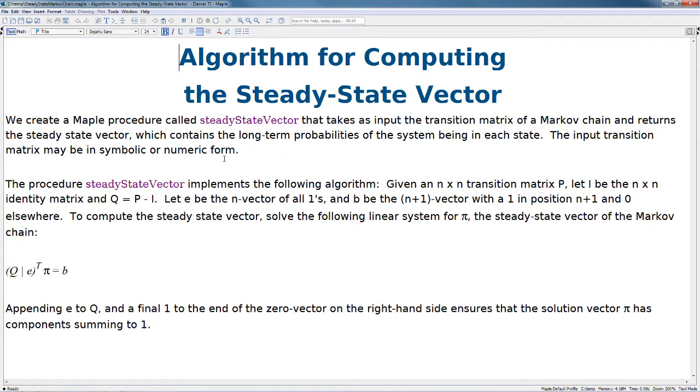The procedure steadyStateVector implements the following algorithm. Given an n by n transition matrix P, let I be the n by n identity matrix and Q equals P minus I. Let E be the n vector of all ones and B be the n plus 1 vector with a 1 in position n plus 1 and 0 elsewhere. To compute the steady state vector, we solve the following linear system for pi, the steady state vector of the Markov chain.